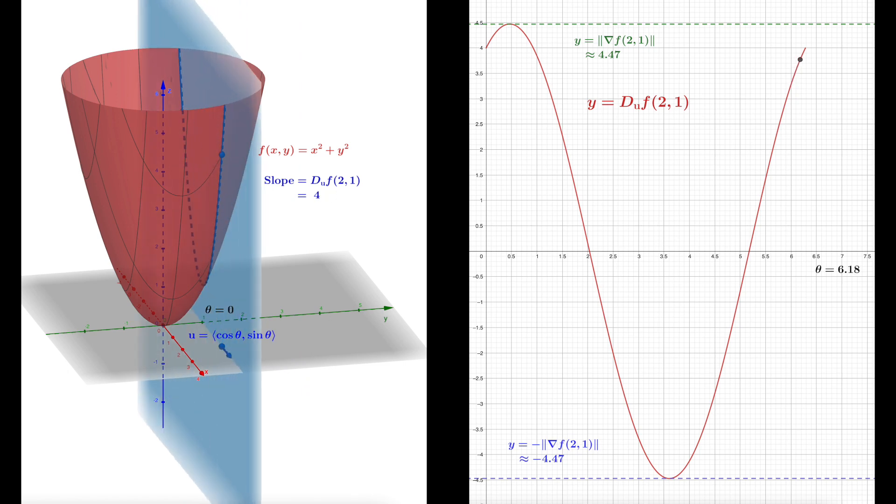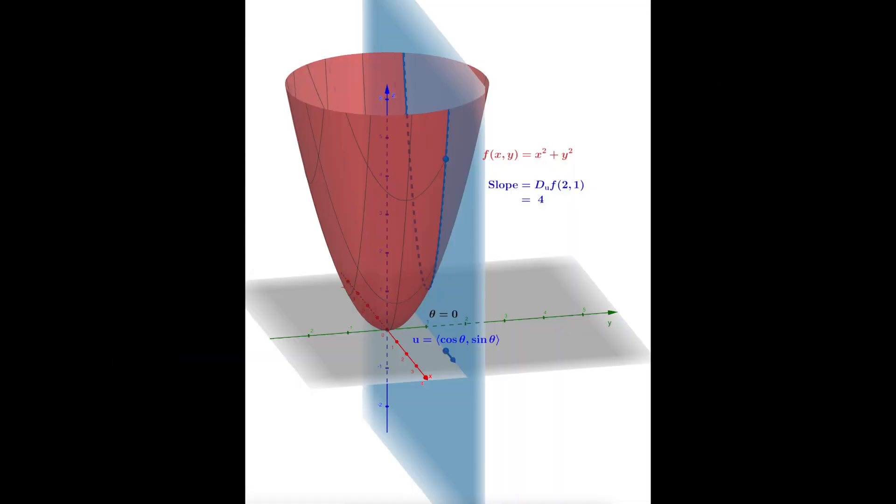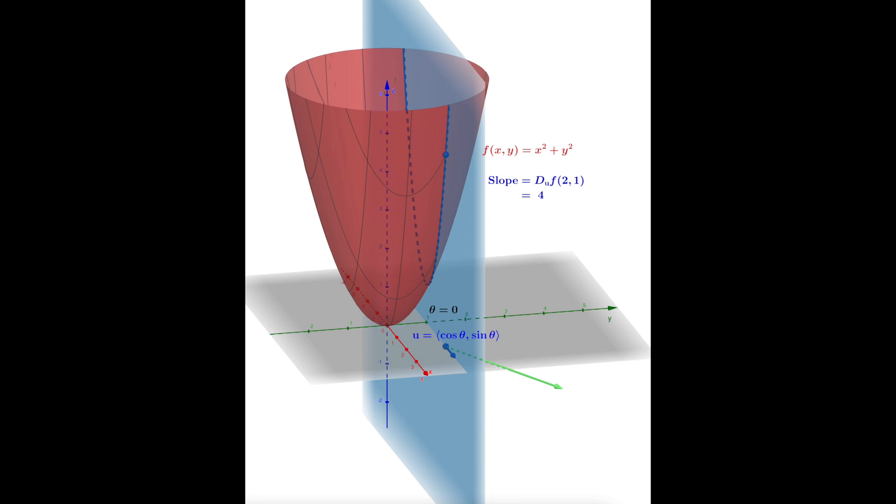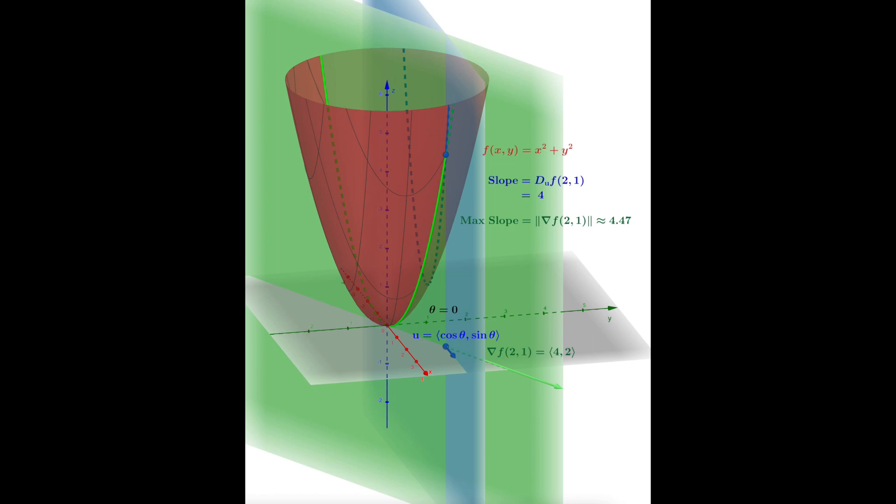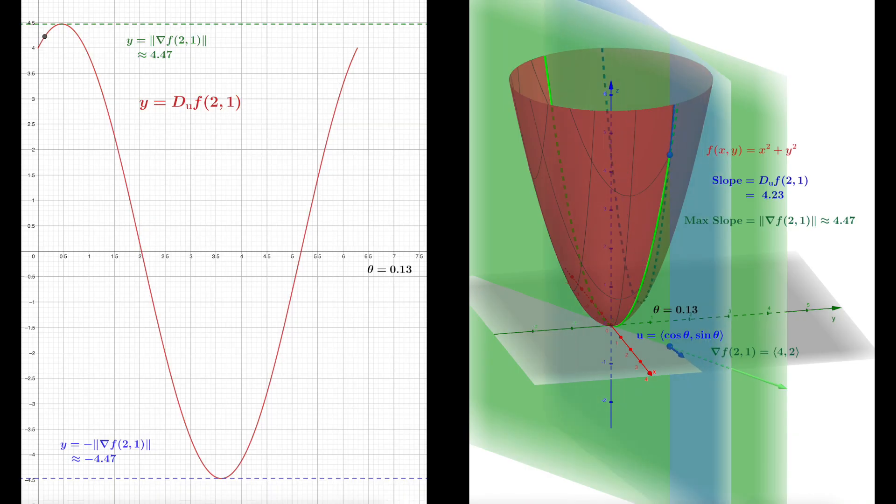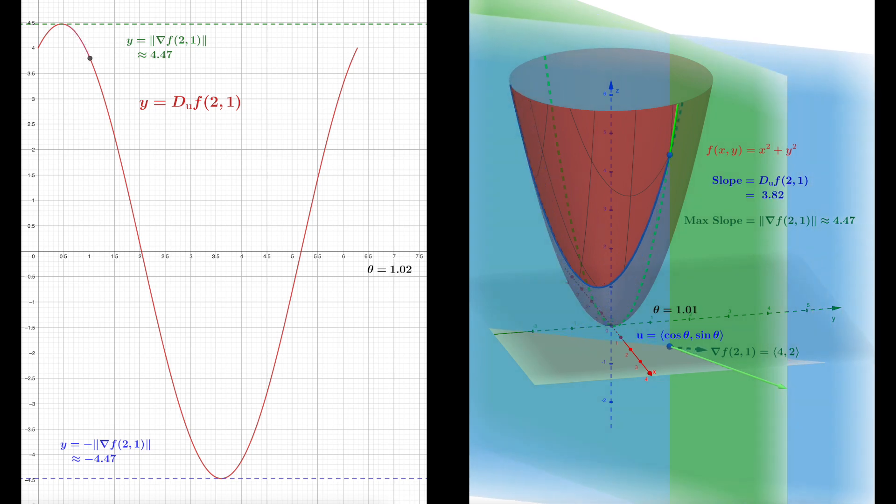Now the last thing we're going to do in just a moment is go back to our surface and add the gradient in. The gradient is this vector here in green, and the gradient at (2, 1) is the vector (4, 2). Now it cuts out its own plane, and that slices through the surface at that point, and the max slope is attained right there. That's the direction in which we are going up the bowl at the fastest rate.